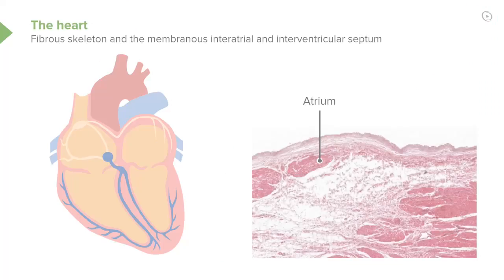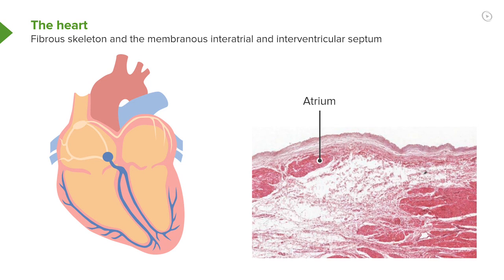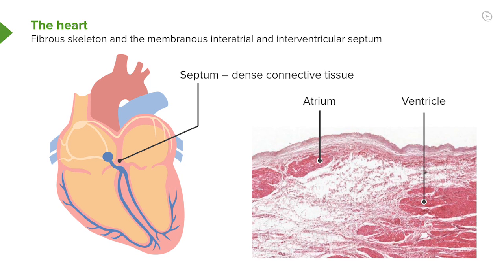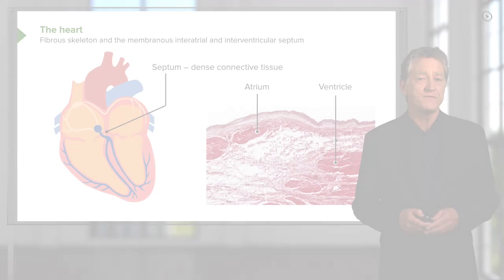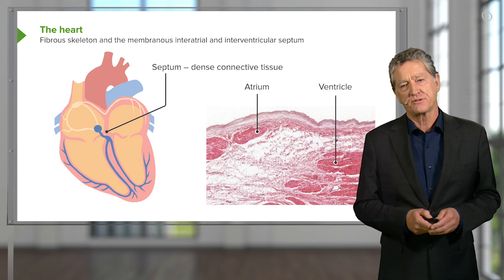On this slide you can see a section through the myocardium of the atrium, and also a septum of connective tissue between both atria, and also between the ventricles. Here is a section showing the myocardium of the ventricle. Notice that in between the myocardium of the atrium and the myocardium of the ventricle, there is a clear component — part of the connective tissue fibrous skeleton — a membrane that separates the atria from the ventricles.